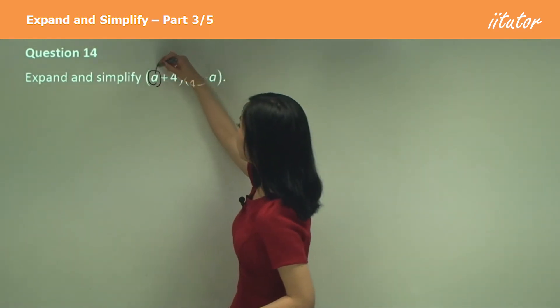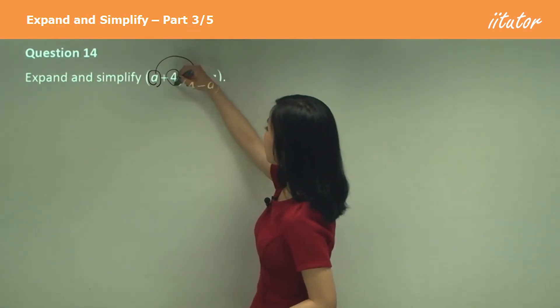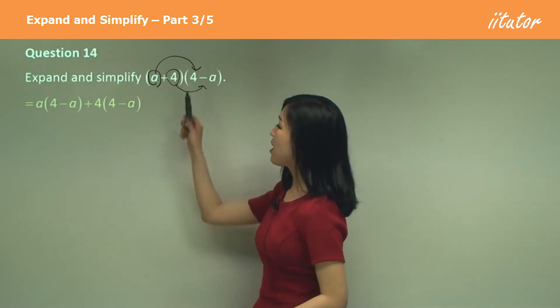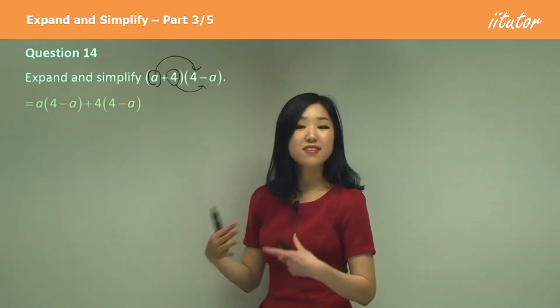So we do a times 4 minus a, 4 times 4 minus a. It's the same thing. So a times 4 minus a plus 4 times 4 minus a. Expand it out.